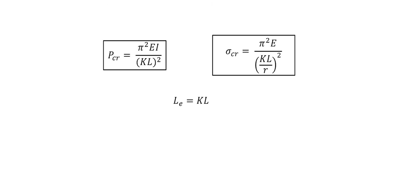Now we're going to look at buckling of columns with various types of supports. The Euler's formula for columns having other types of supports can be written as: critical load equals pi squared times EI over (KL) squared. Where KL is the effective length, which is the distance between the zero-moment points or inflection points, defined as LE equals KL. K is the effective length factor, a dimensionless factor that accounts for end conditions. The effective slenderness ratio is defined as KL over R, or LE over R.